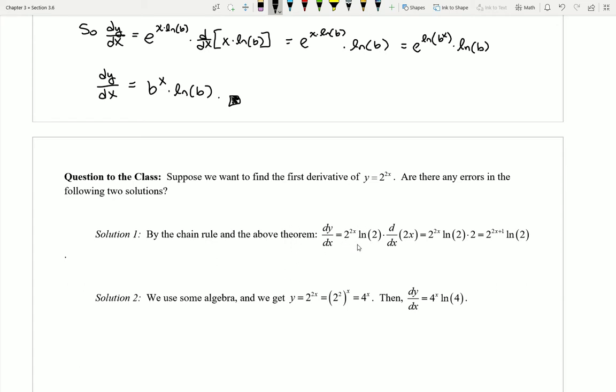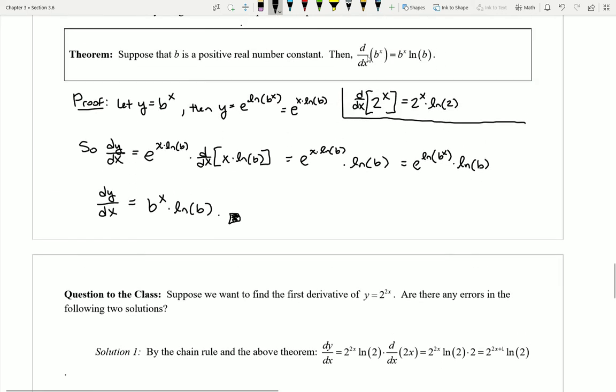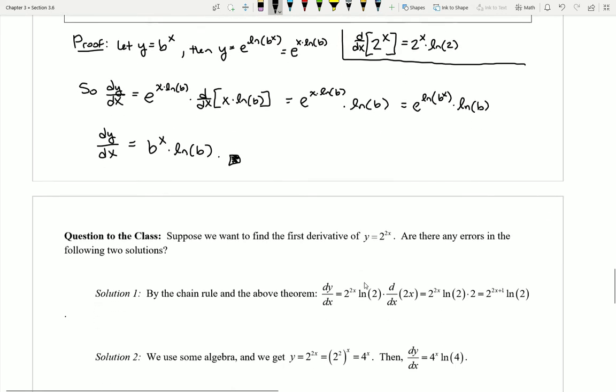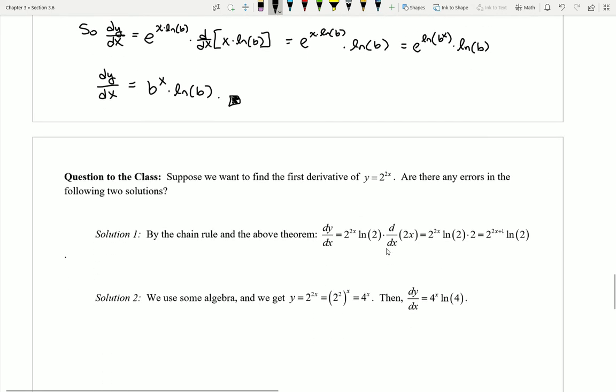The first one here is making use of the chain rule. It says if I have to do the derivative of 2 to the stuff, my answer should be 2 to the stuff natural log 2, so I'm just following my basic derivative rule that we have up here, but now I have to follow up with a chain rule portion by saying look at the stuff in the power, it wasn't just an x, so I need its derivative.